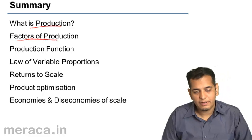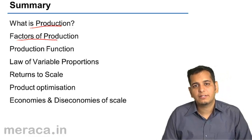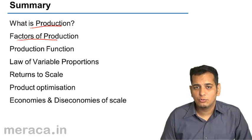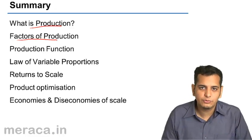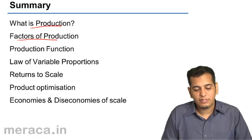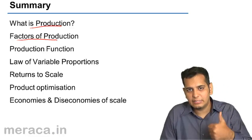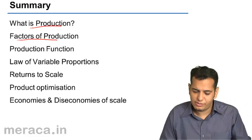Then we studied what are factors of production. We said factors of production are those elements, those things which help us to produce goods. And factors of production are namely land, labor, capital and enterprise.